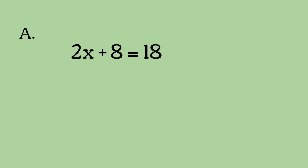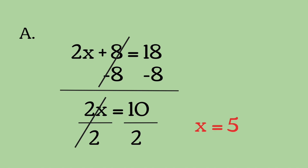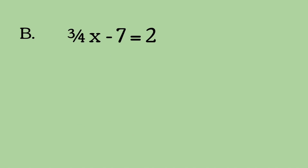Let me explain. For A, we have 2x plus 8 equals 18. We subtract 8 on both sides and get 2x equals 10. Then we divide by 2, and x equals 5. Fairly simple.